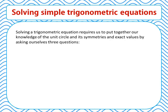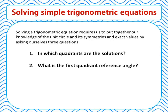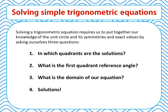Solving a trigonometric equation requires us to put together our knowledge of the unit circle and its symmetries, along with the exact values. We do this by asking three questions. First: in which quadrants are the solutions? Given that sine, cos, or tan is positive or negative, this requires knowledge of symmetries and the CAST rule. Second: what is the first quadrant reference angle — an angle between 0 and 90 degrees to which all solutions are related, requiring knowledge of exact values. Third: what is the domain of the equation?